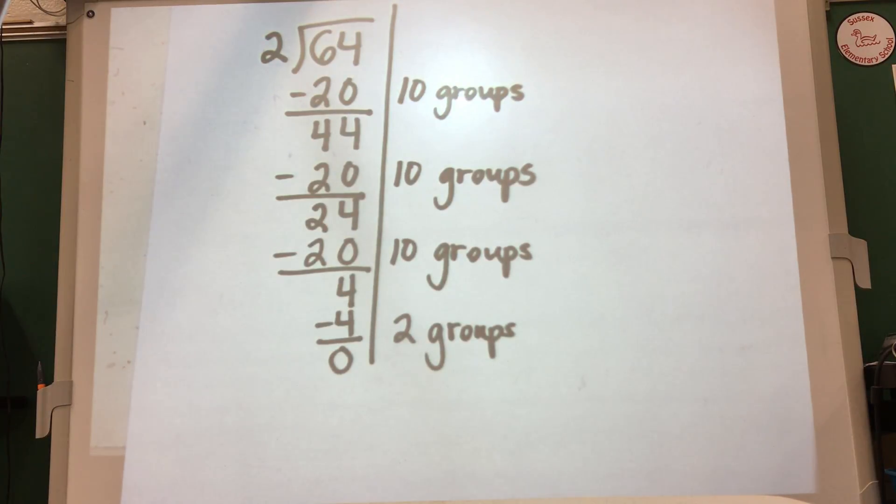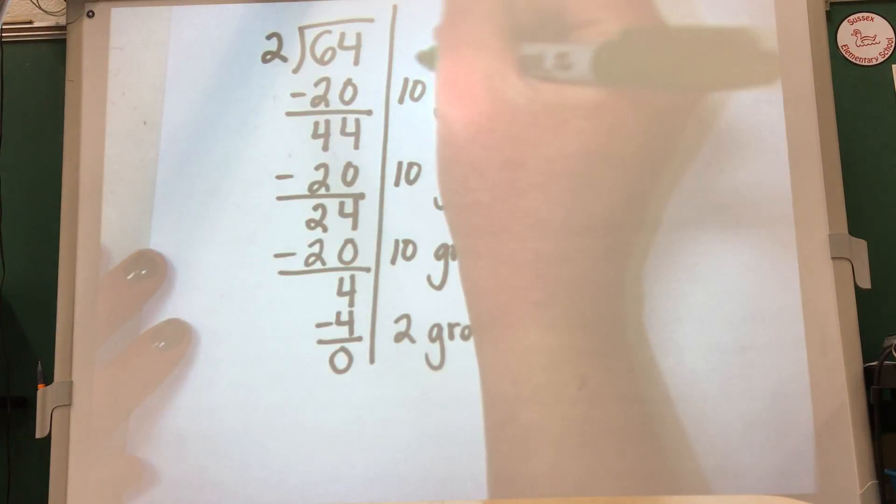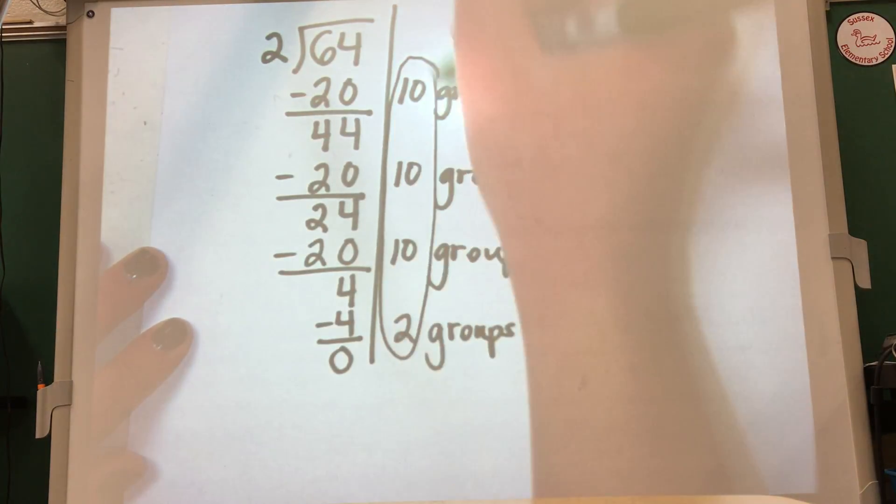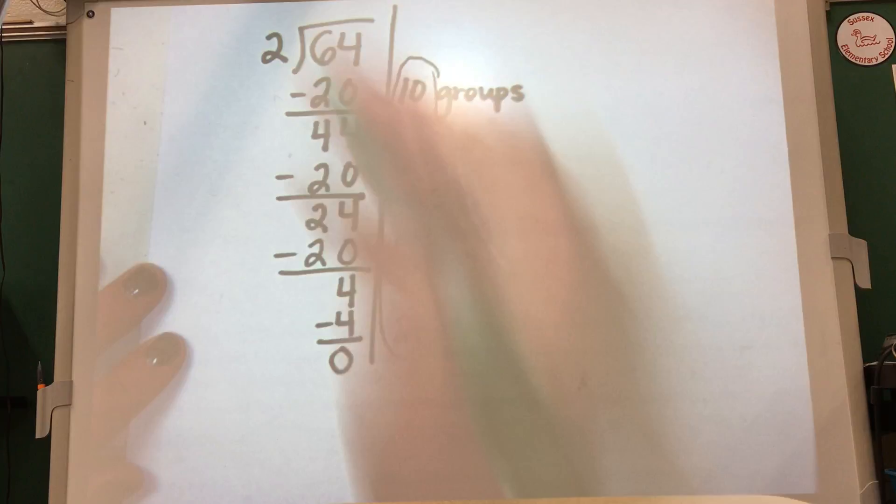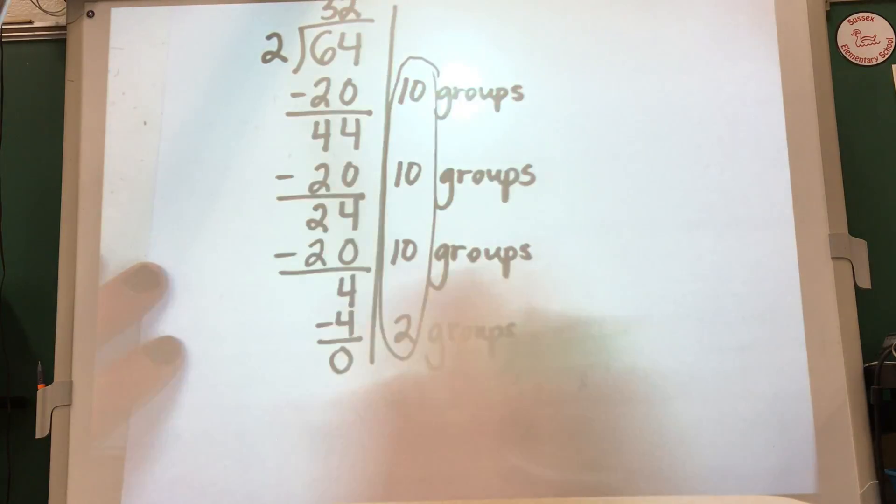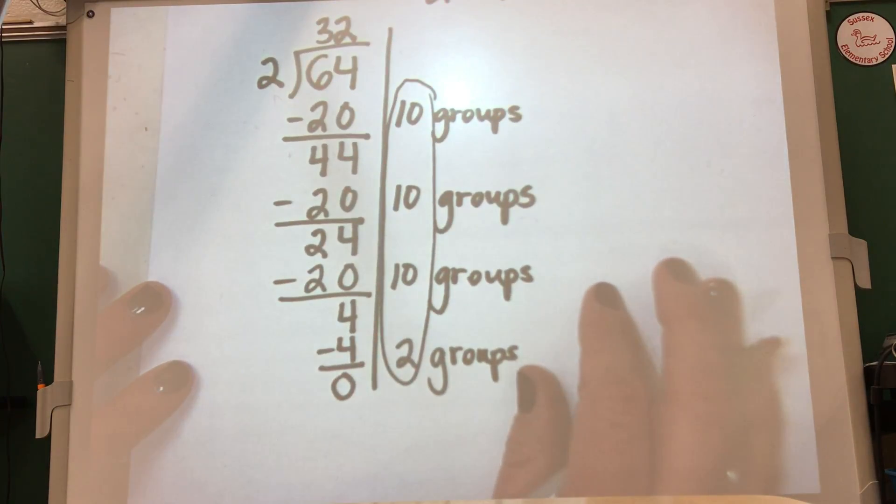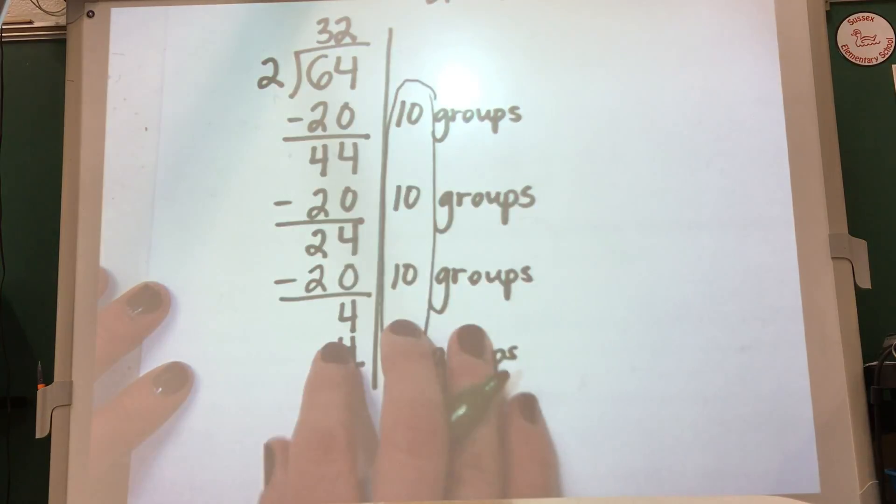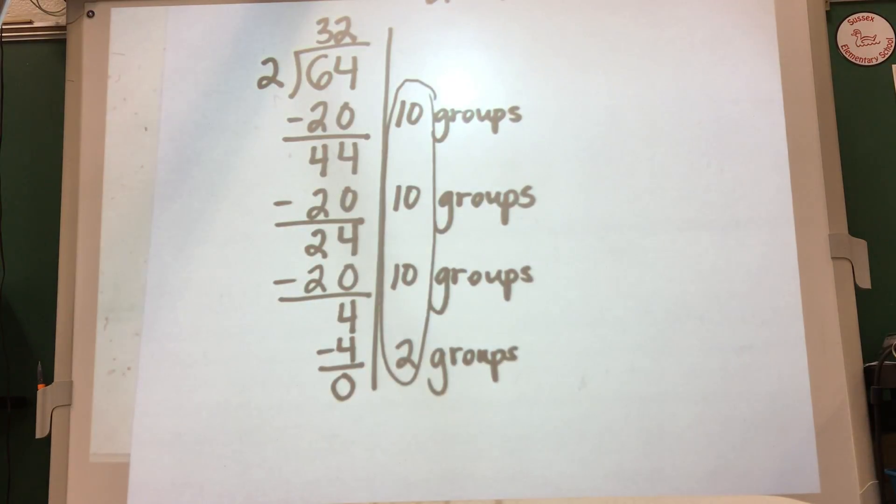Now my answer is how many groups of 2 go into 64. This is my answer right here. I have 10, 20, 30, 2. My answer is 32 groups of 2. Now you might be thinking this is so much longer than the traditional long division algorithm, and it is, but it tends to make a lot more sense to students and they tend to not forget it as easily as they forget the long division method.